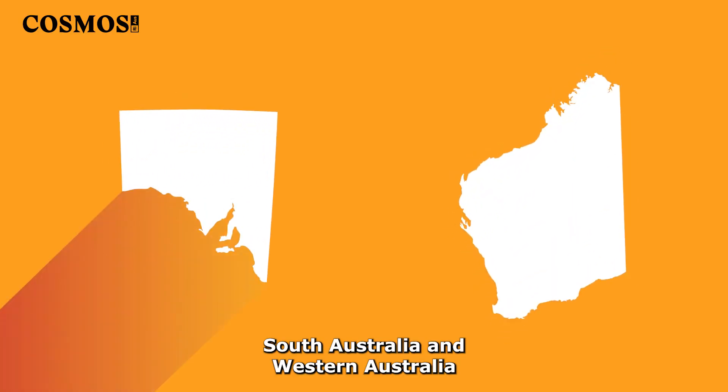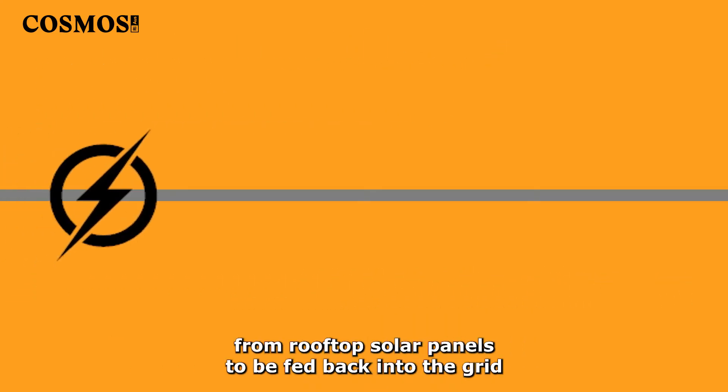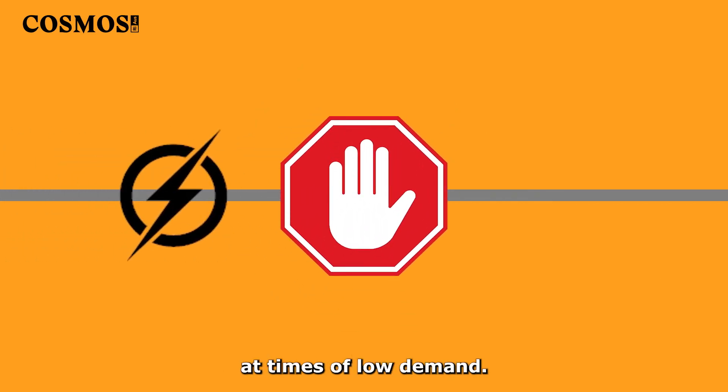That's why state governments in South Australia and Western Australia have taken on the ability to curtail or block too much excess electricity from rooftop solar panels to be fed back into the grid at times of low demand.